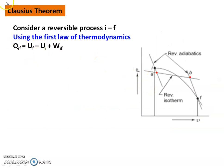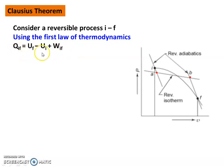Now the next topic is Clausius Theorem. Consider a reversible process I-F, which is a curved line in the PV diagram. Applying the first law of thermodynamics to the I-F process: Q_IF = (U_F − U_I) + W_IF. Heat transfer equals change in internal energy plus work transfer. Here Q_IF is the heat transfer, U_F is the final internal energy, U_I is the initial internal energy, and W_IF is the work done for the process I-F.